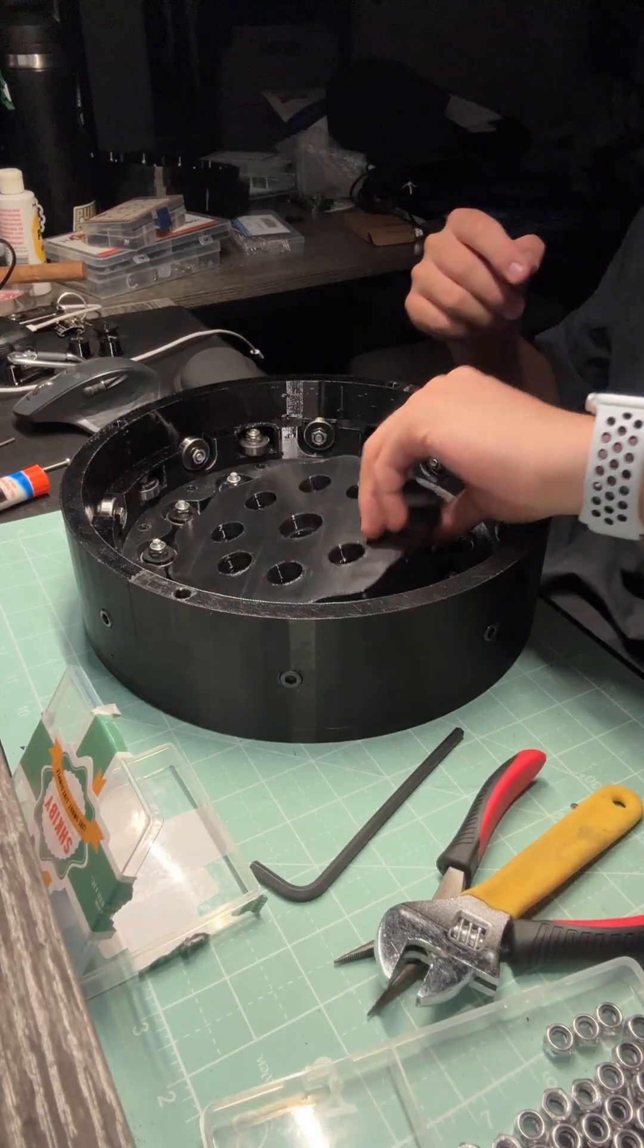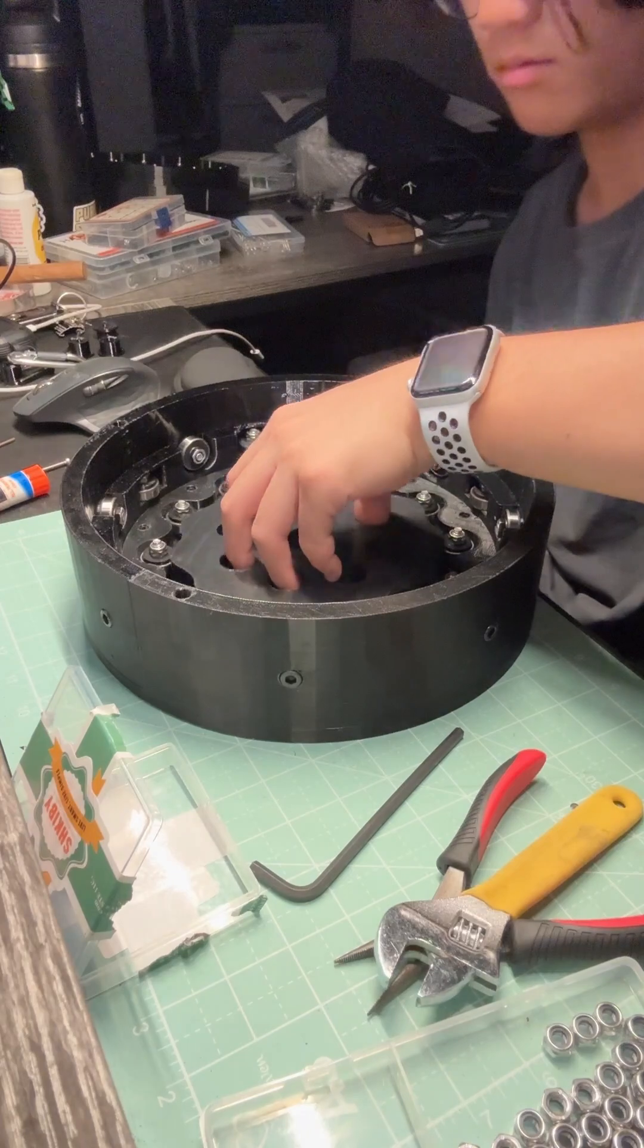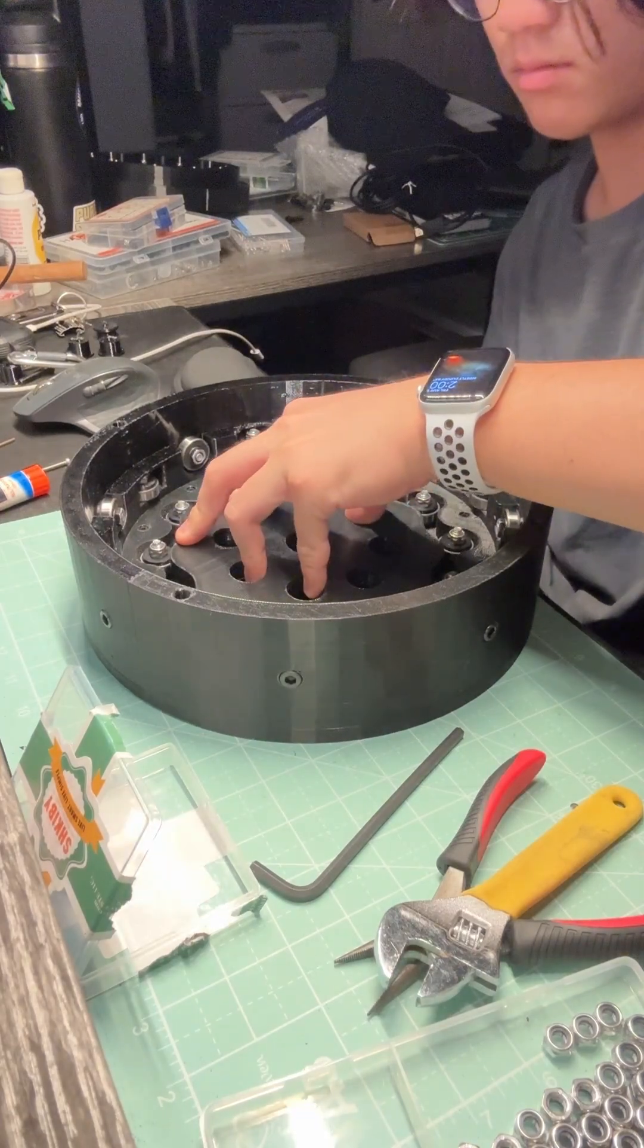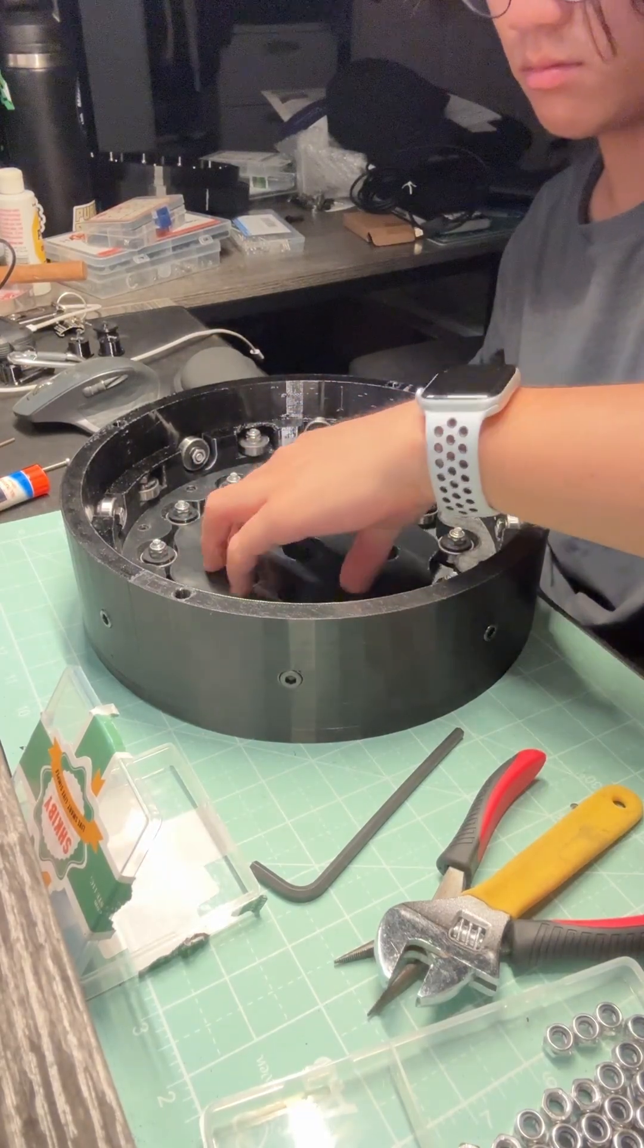I placed the first stage cycloidal disc inside, and similarly to the second stage cycloidal disc, it was a bit of a tight fit. When I tried to spin it, however, it had very little resistance, which was really nice.